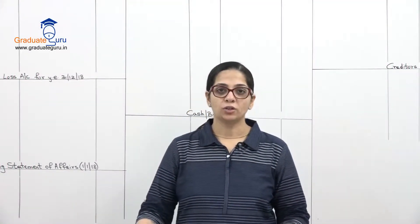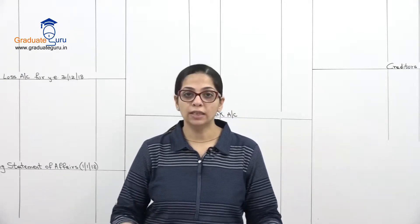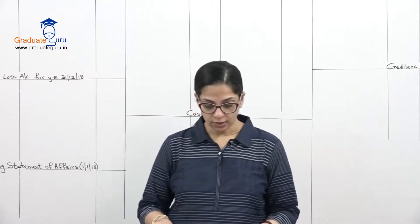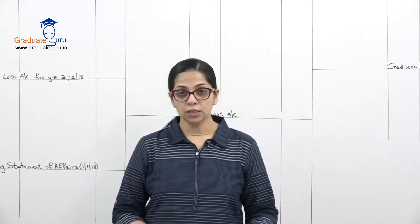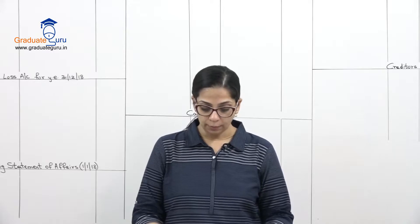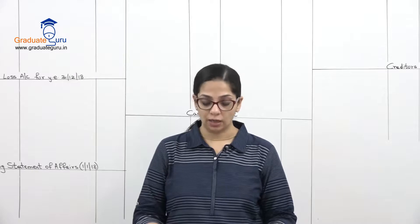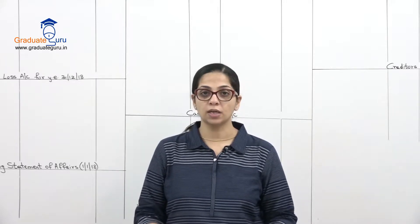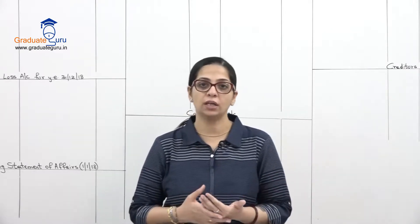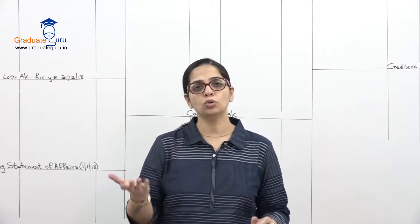Hi students, welcome back to Graduate Guru. Today we'll be doing question number 13 on the topic accounting from incomplete records. Mr. Sunny is a small trader who does not maintain accounts on the double entry system. He maintains a gross profit margin of 25% on sales. The GP ratio is given, so we'll calculate GP and find the missing amount in the trading account.